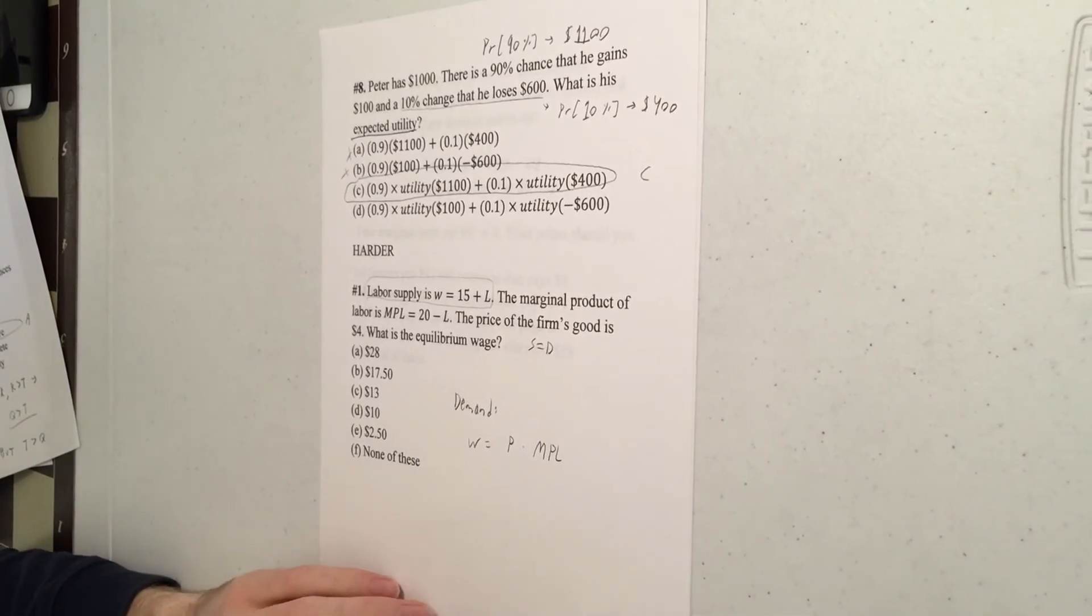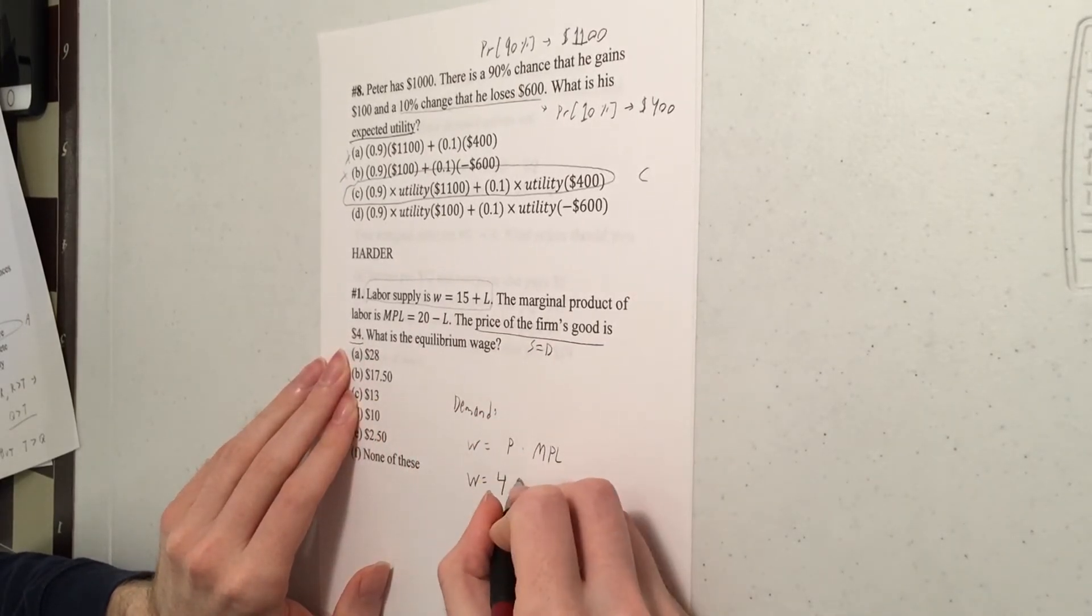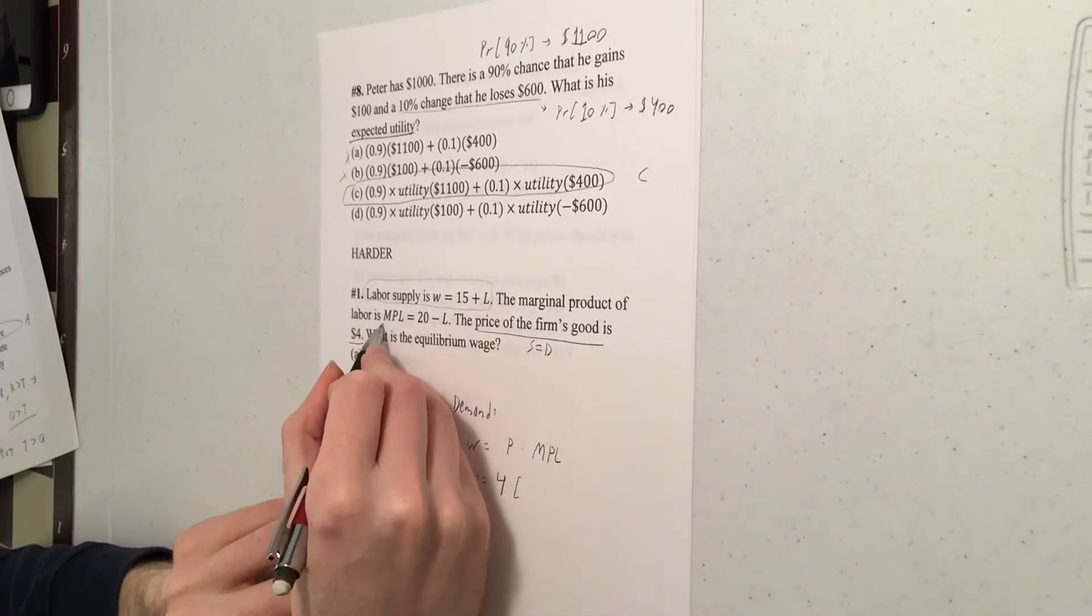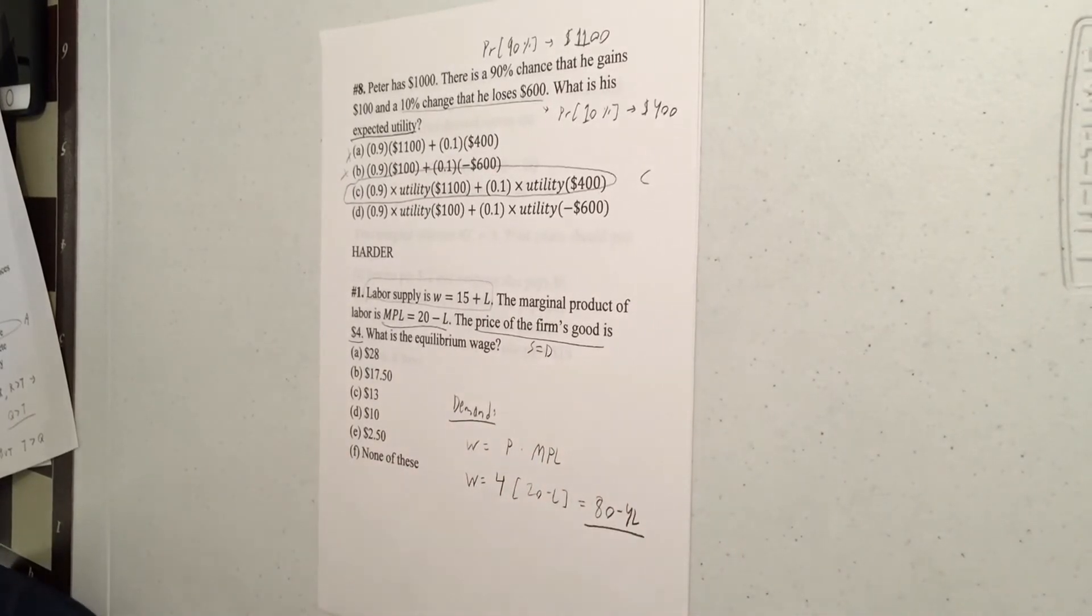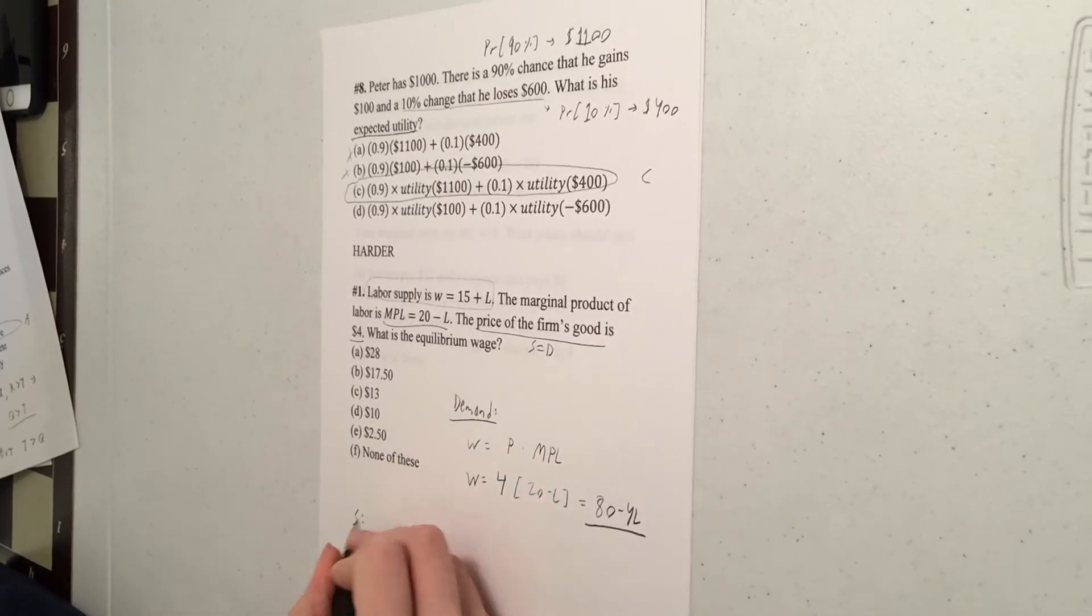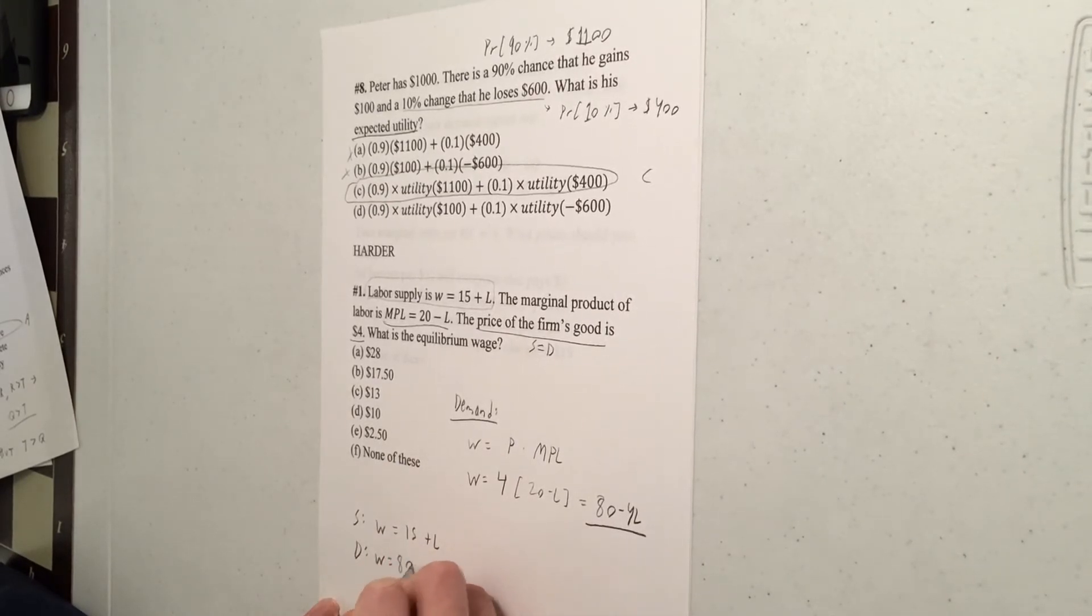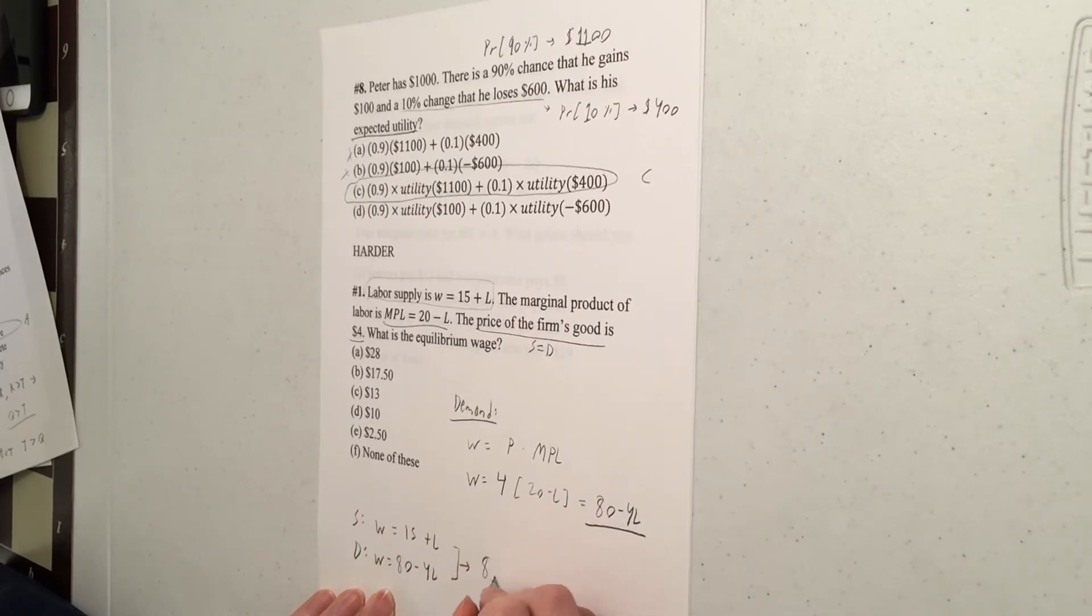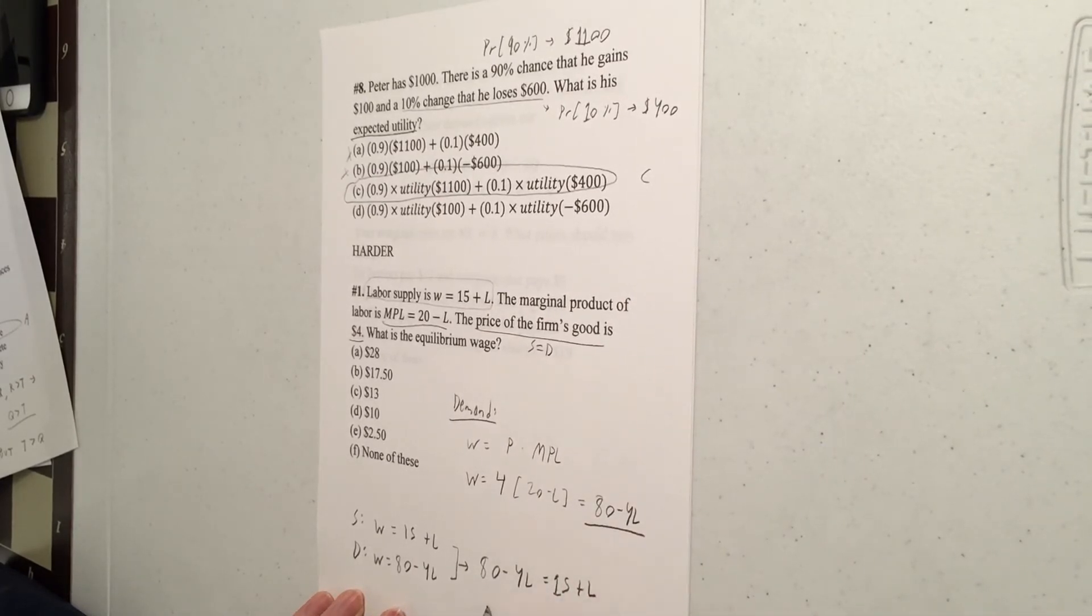So we're told the price is $4. And we're told the marginal product of labor is 20 minus L. So that comes out to 80 minus 4L. So that's demand. So you combine that with supply, which we said was W equals 15 plus L. So that gives us, we just sub out the W. 80 minus 4L is 15 plus L.